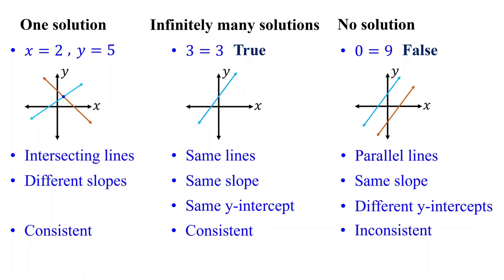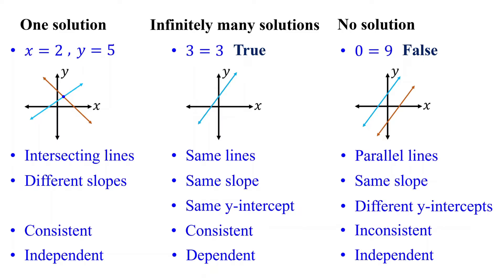A system can also be classified as dependent or independent. If all solutions of one equation are also solutions of the other, they are called dependent equations — systems with infinitely many solutions are dependent. If the two equations have their own distinct sets of solutions, they are independent. Systems with one solution or no solution are independent. Graphically, identical lines are dependent, while intersecting or parallel lines are independent.